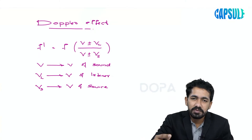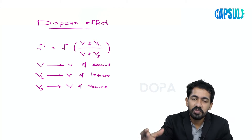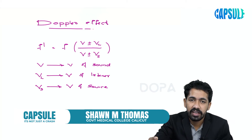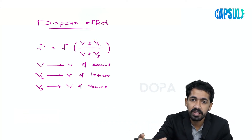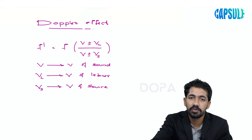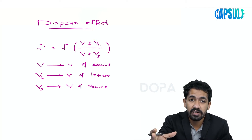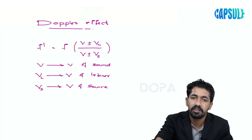We'll be discussing the Doppler effect from the chapter on waves. The Doppler effect is the phenomenon of having an apparent frequency when there is a relative change in position between the listener and the source. Whenever there arises an apparent frequency due to the relative change in position between source and listener, there will be a Doppler effect.